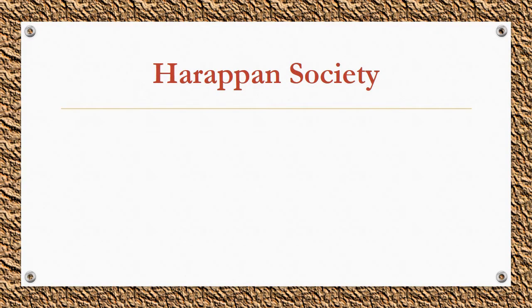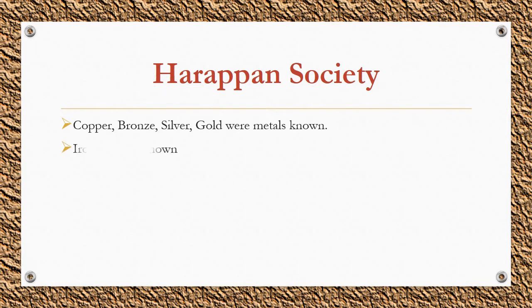The Harappan society was an urban society, and much evidence is available to understand the social life of Harappans. Based on excavations, we can find that copper, bronze, silver, and gold were the metals known to them. However, the Harappans did not know iron. They were good at metallurgy and producing alloys.